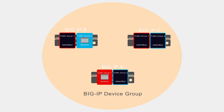So instead of the Big IP system comparing the HA scores for each device in the list, it not only looks at the device's availability, but also the extent to which its external resources meet a minimum availability requirement defined in the HA group for this traffic group.